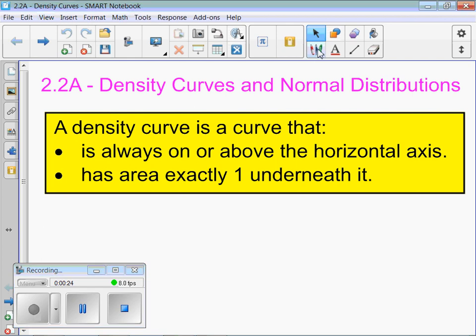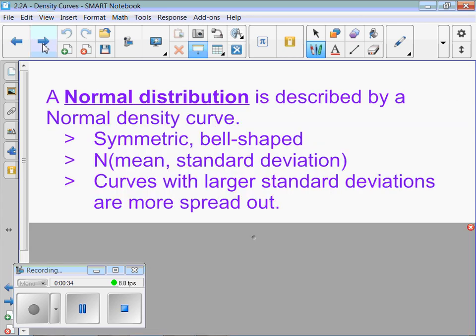Except we say things are normal. For now, you guys can just say the problem is going to tell you it's a normal distribution. Eventually, we're going to check for if it's normal. Normal distribution is described by a normal density curve, which is symmetric and bell-shaped.